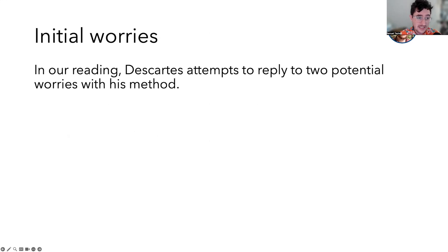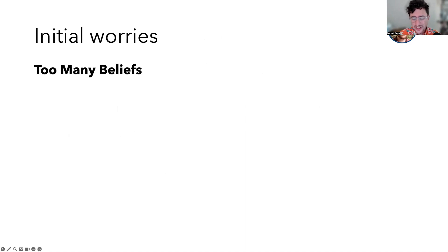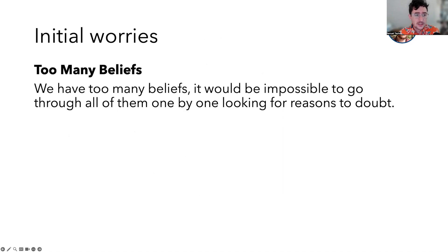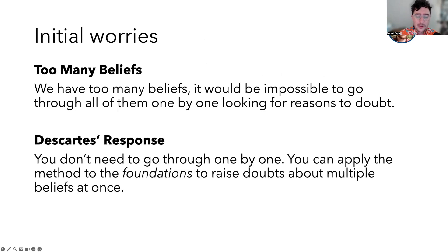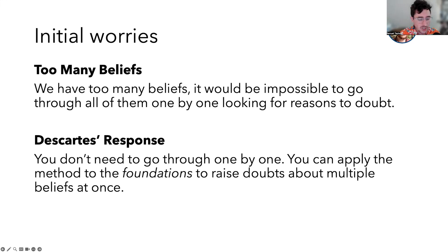Descartes does attempt to reply to potential worries you might have with adopting this method for determining what we do and don't know. One worry is that we have too many beliefs — we just aren't going to be able to go through each of them one by one looking for reasons to doubt them. Descartes replies that this isn't really a problem because you don't need to go through your beliefs one by one. You can apply this method by looking for reasons to doubt the foundations of your beliefs, and if there is a reason to doubt the foundations, that'll give you a reason to doubt a whole bunch of beliefs all at once.